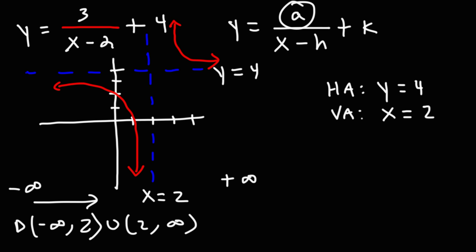Now, to write the range, we need to focus on the y values. So we're going to analyze the graph from the bottom to the top. The lowest y value is negative infinity. The highest is positive infinity. But we need to take out the horizontal asymptote, y equals 4.